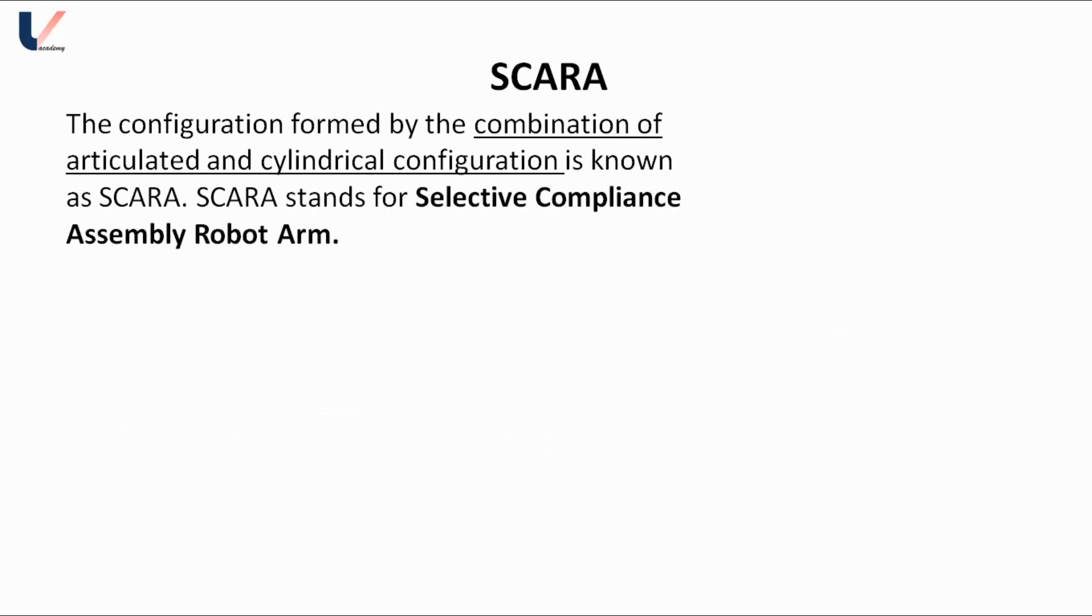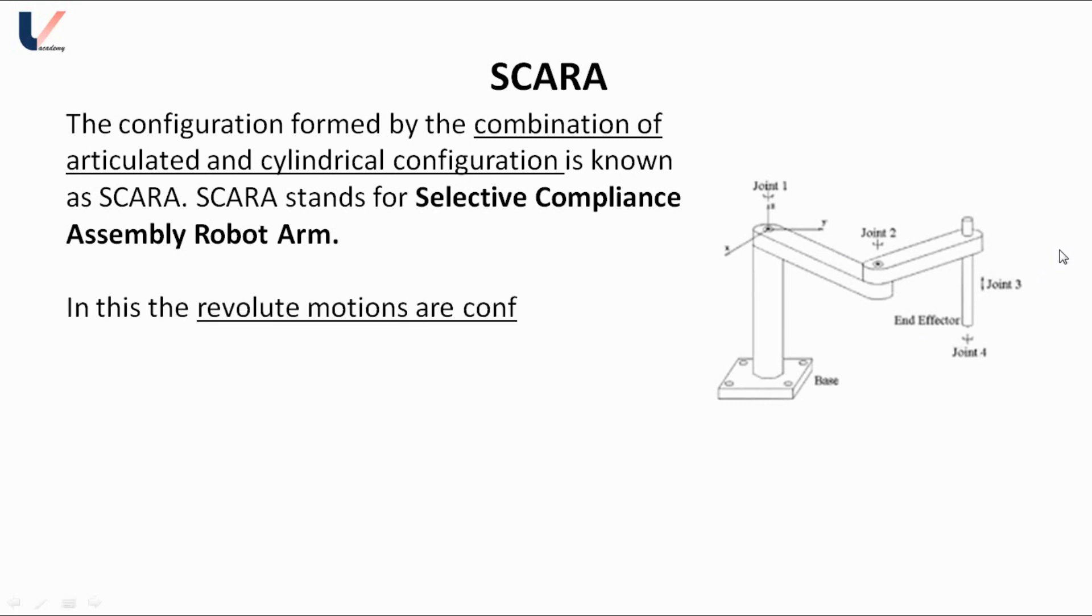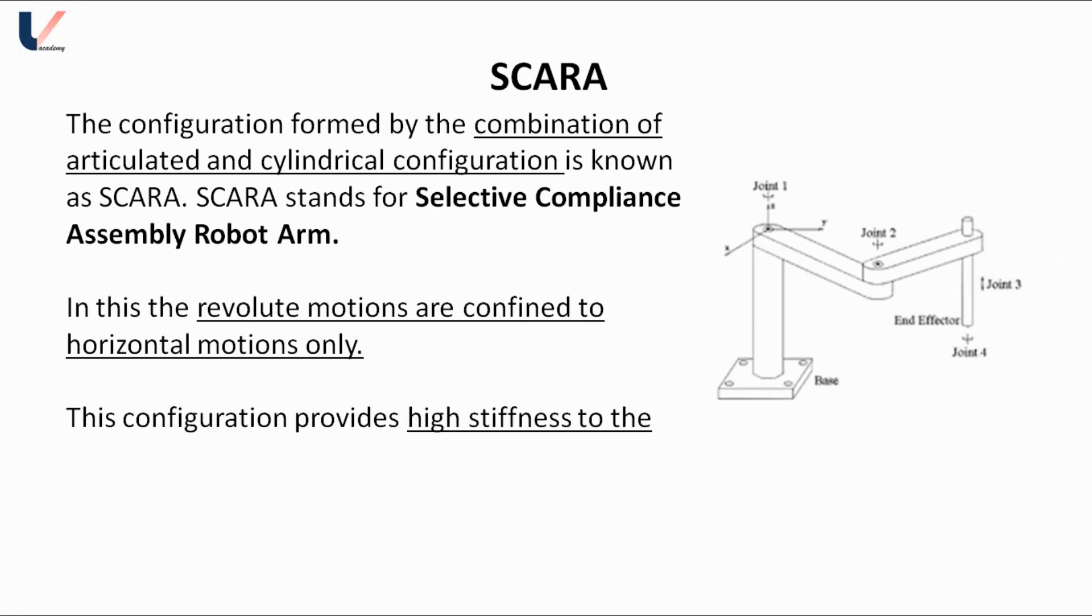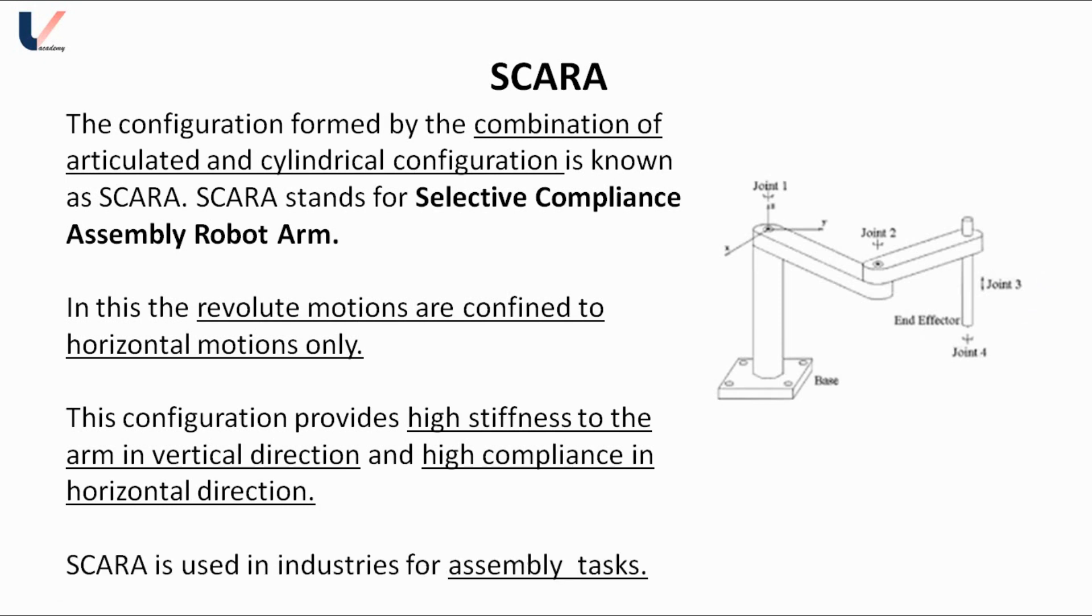In this, the revolute motions are confined to horizontal motions only, that is the links can revolve only horizontally, resulting in high compliance in the horizontal direction and high stiffness in the vertical direction. The stiffness of the SCARA in the vertical direction is much more than other types of configuration. Therefore, the SCARA is used in industries for assembly applications. That was all for this lecture. See you in the next lecture.